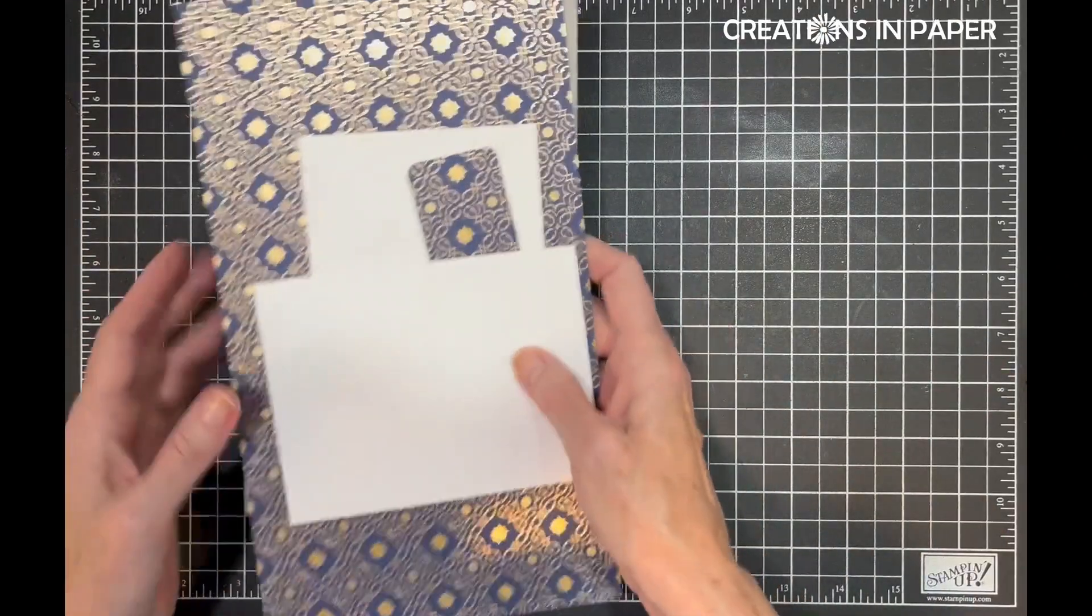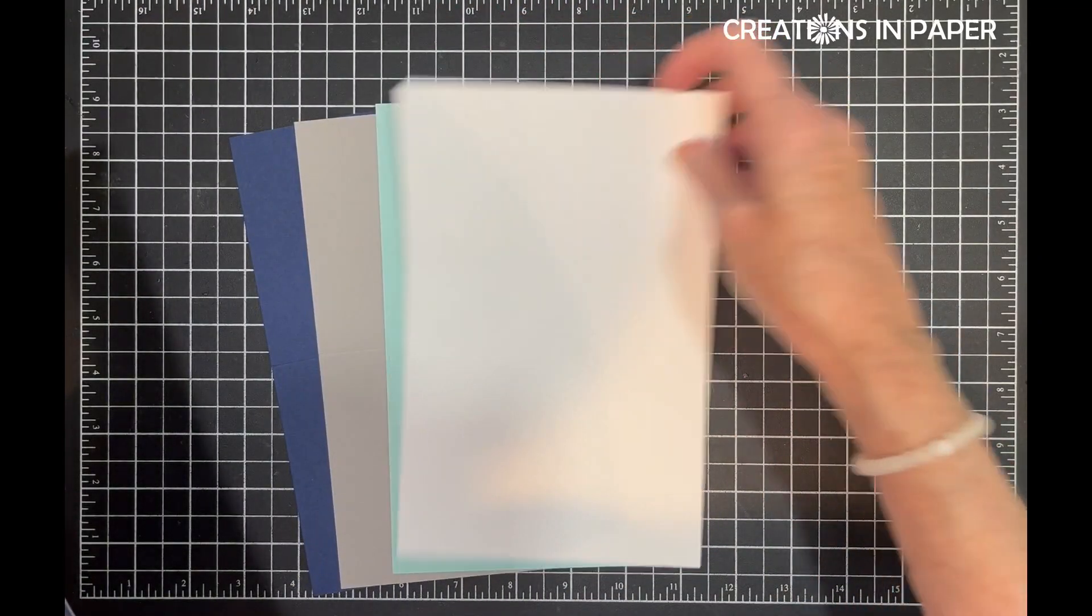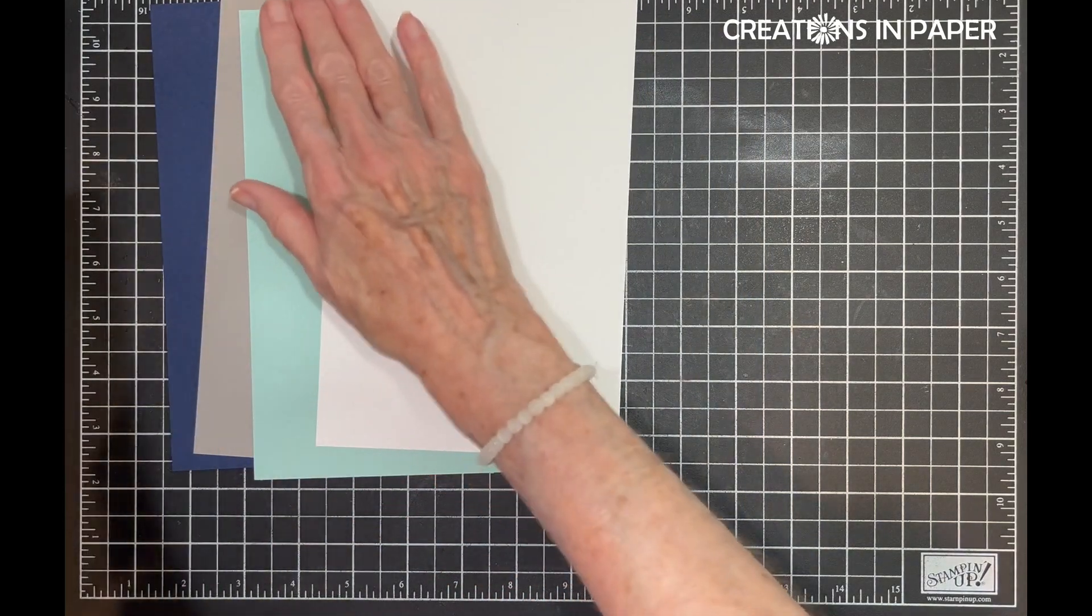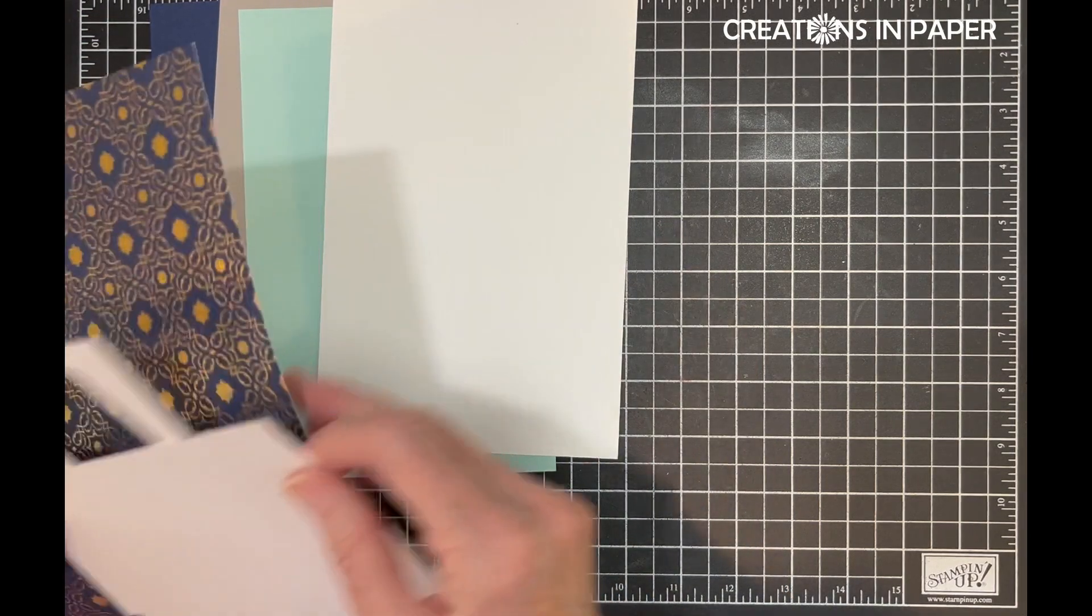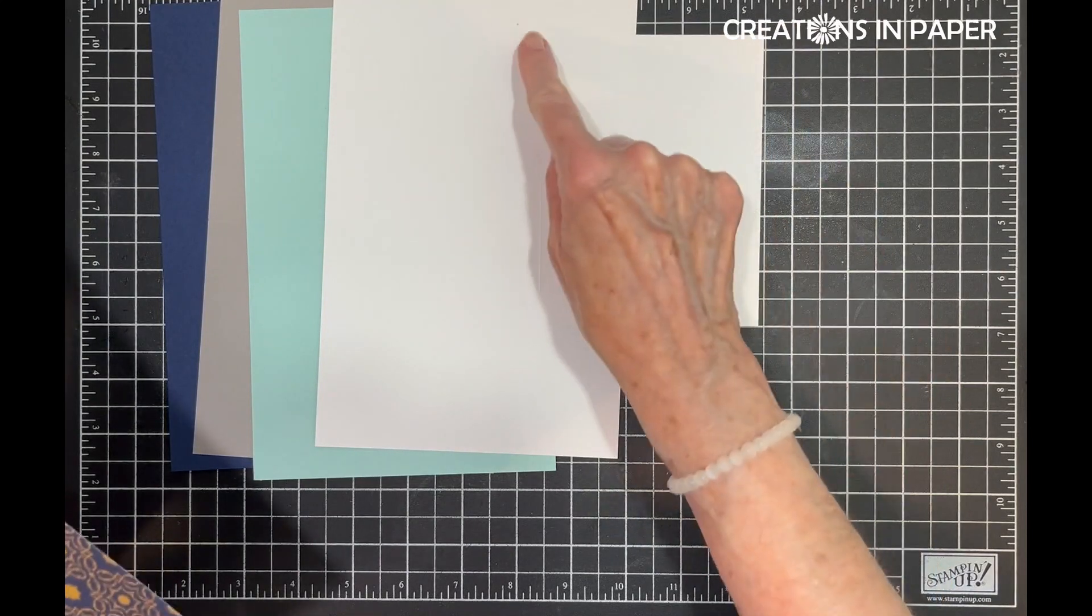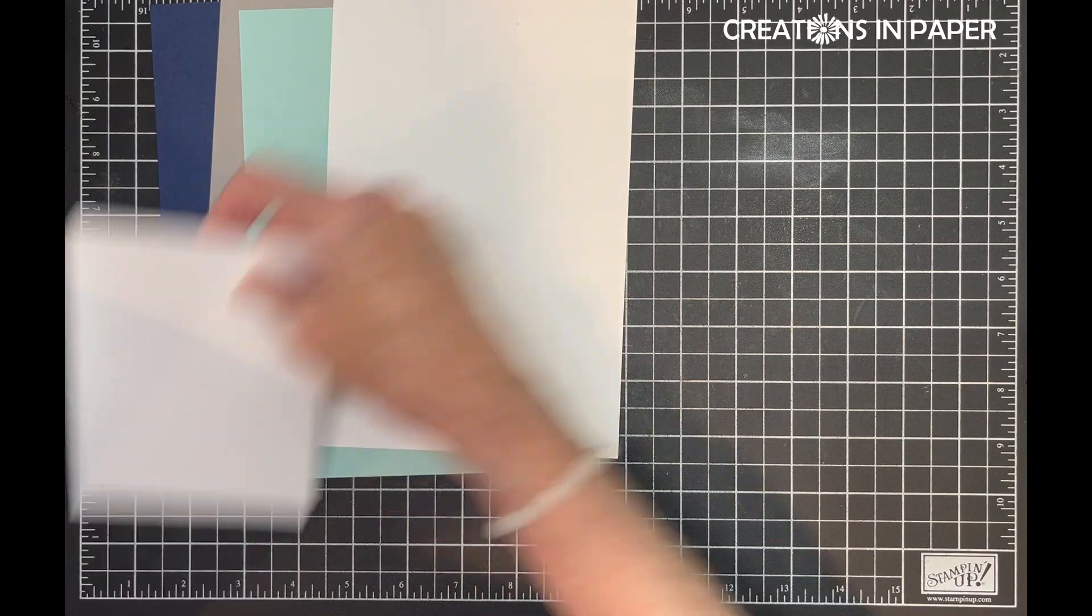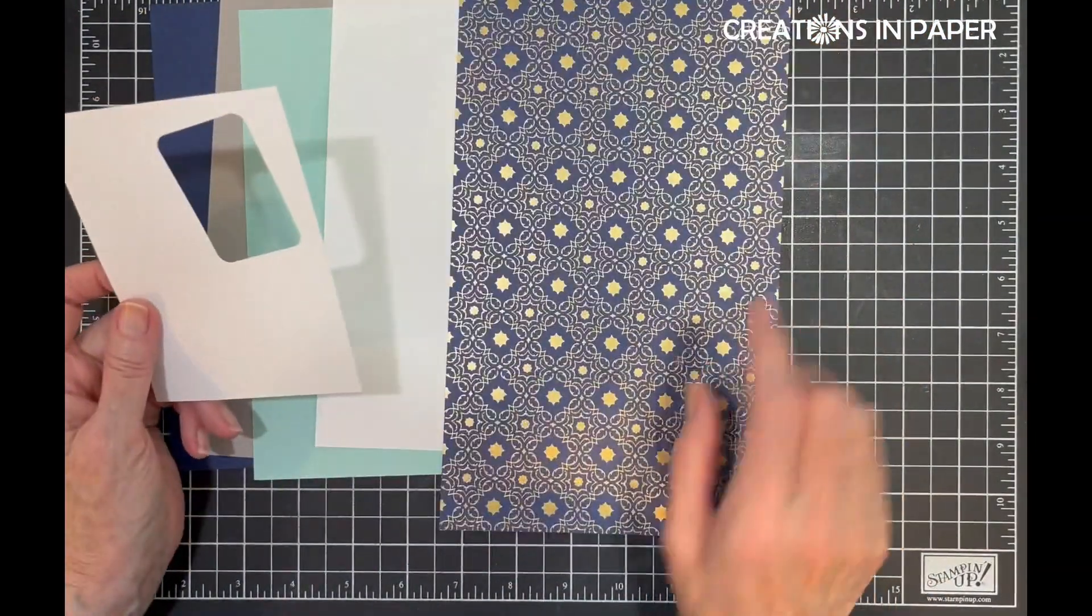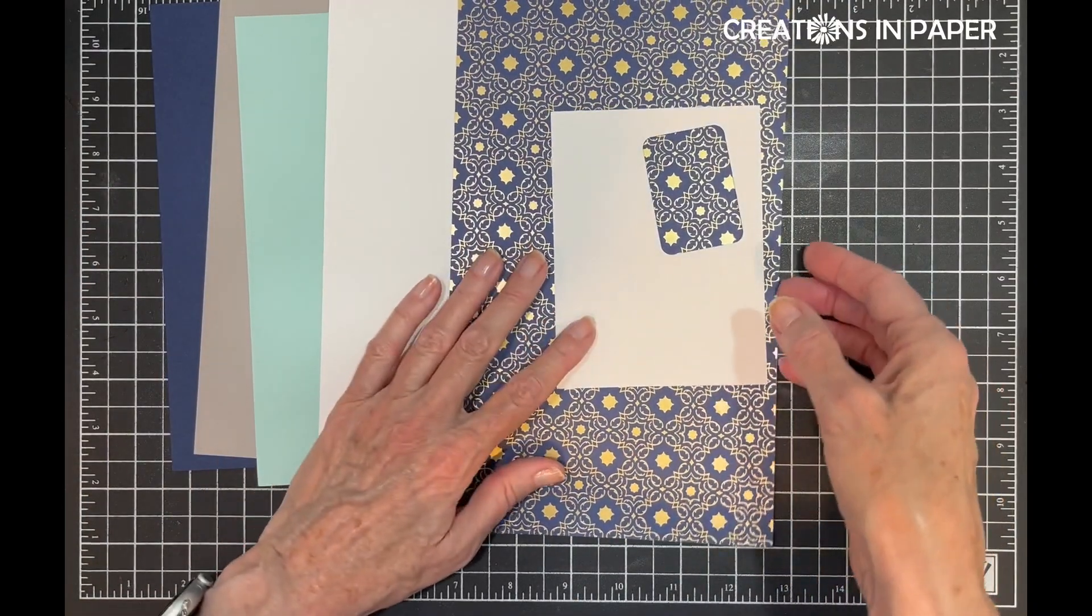For my card, I have my four card bases because I don't know which one I'm going with, probably not white, but you never know. They're all five and a half by eight and a half, scored at four and a fourth. I have a piece of white that is four by five and a fourth. I have a scrap of the Shining Brightly DSP and a scrap of white.